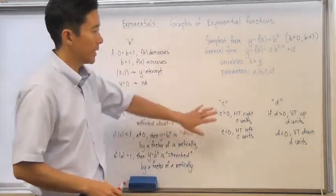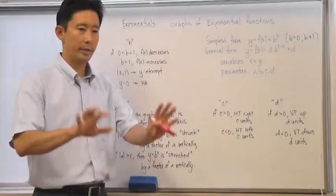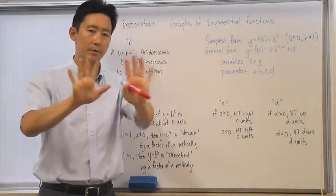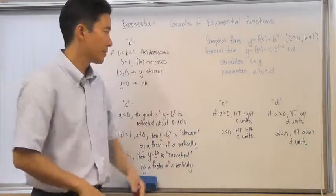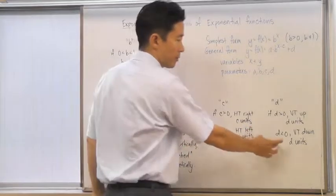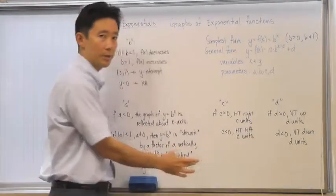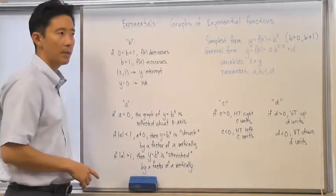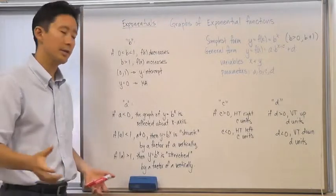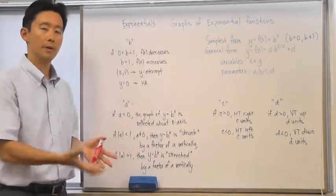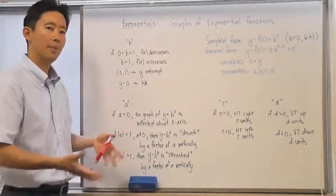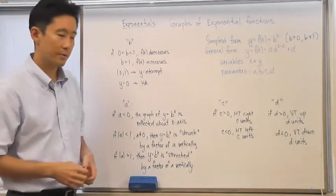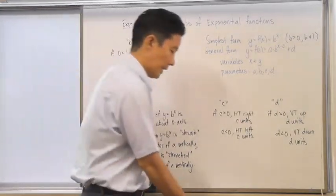We can categorize these parameters as rigid or non-rigid transformations. c and d are rigid transformations because we're just shifting the graph up, down, left, or right. On the other hand, a and b — depending on their values — change the shape of the graph, so they are non-rigid transformations.